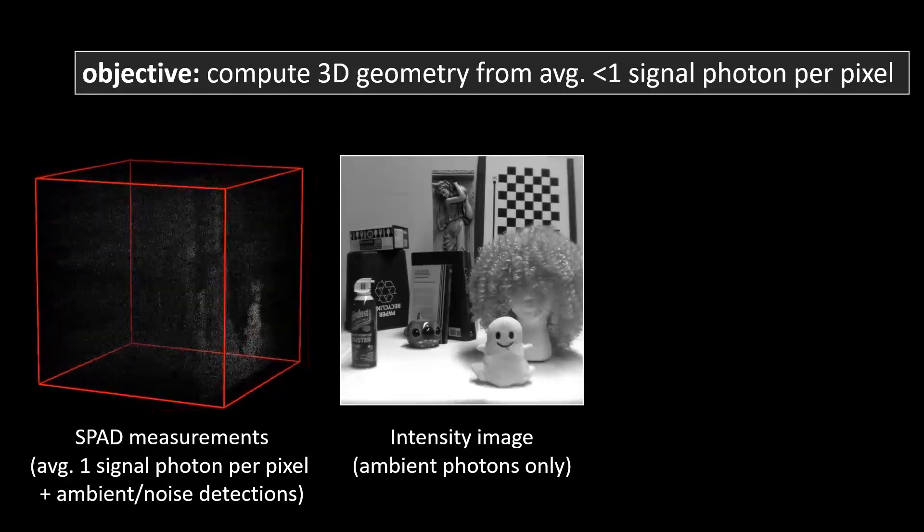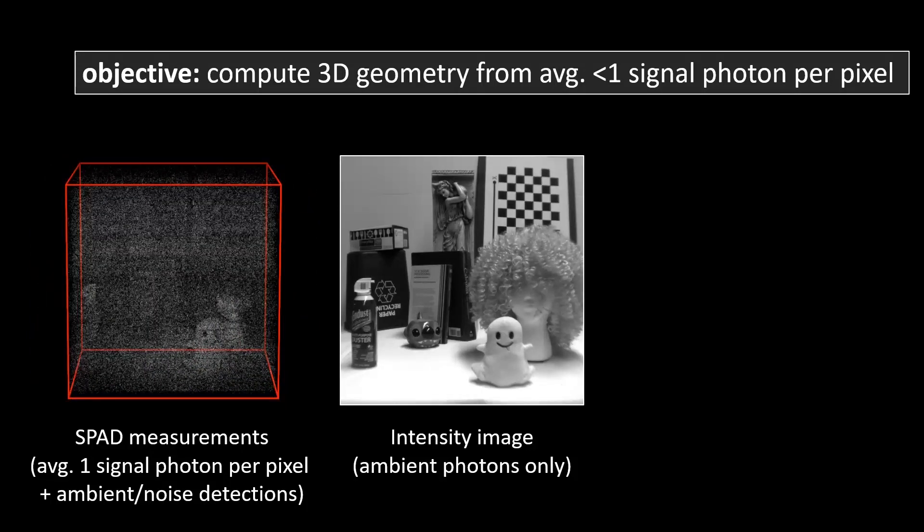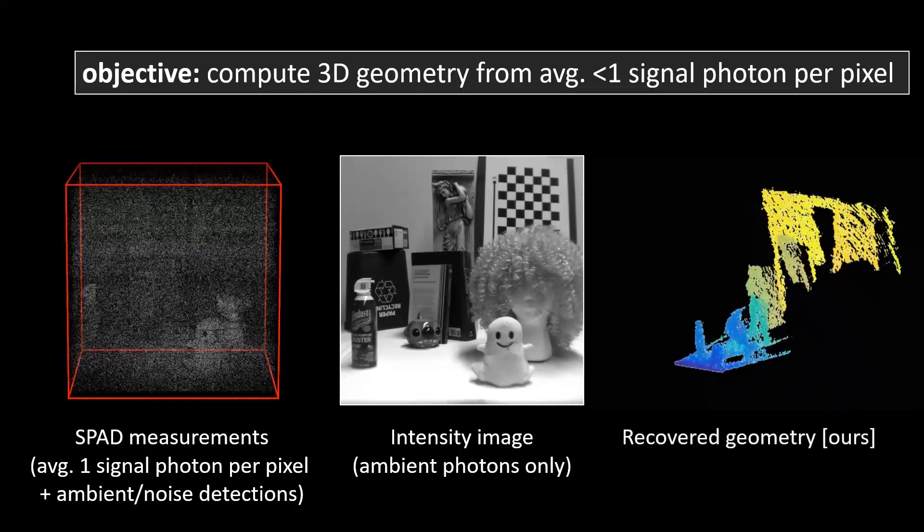We propose data-driven methods that take as input the time of flight of arriving photons recorded for each spatial position and a regular intensity image, and estimate the 3D geometry.